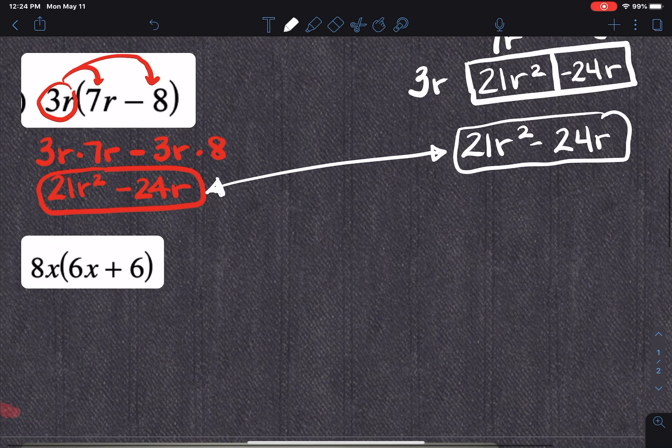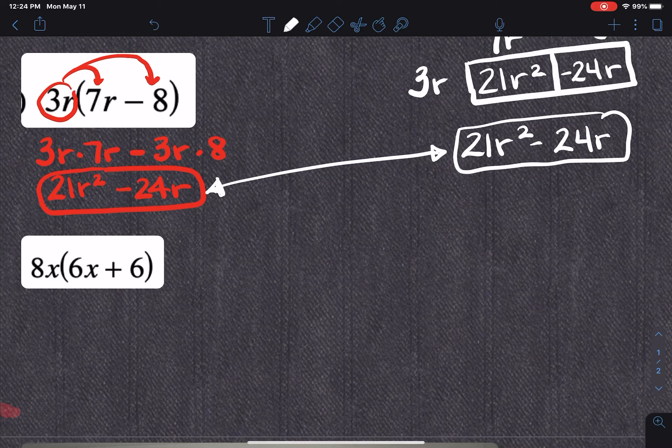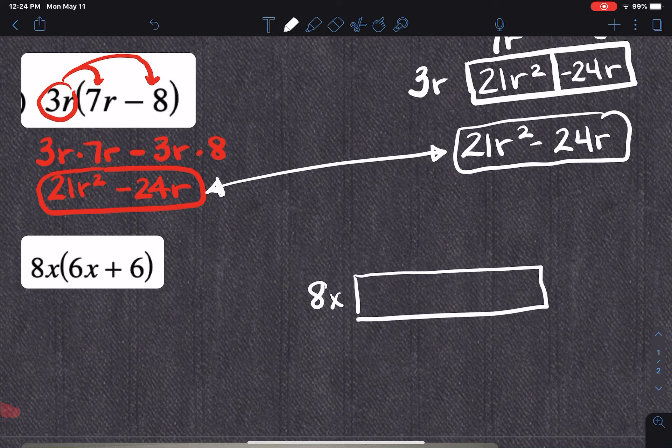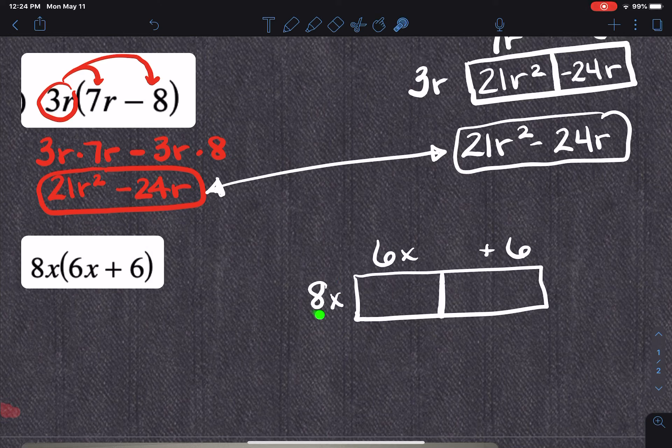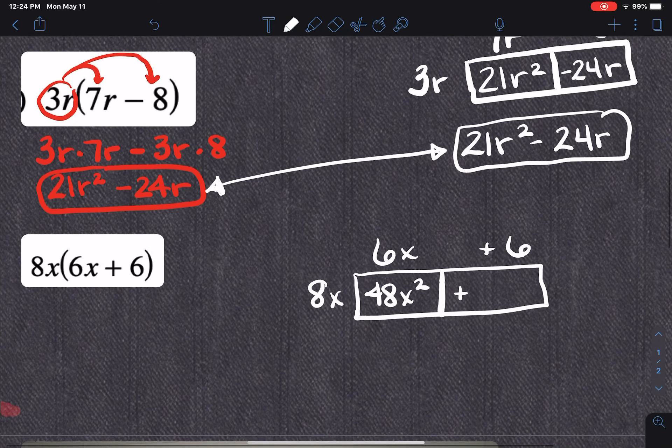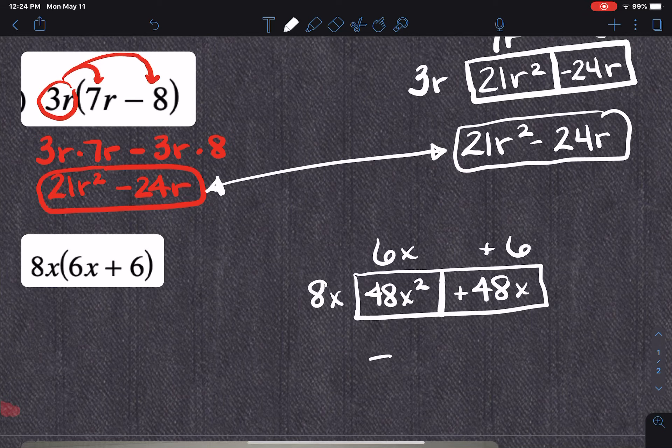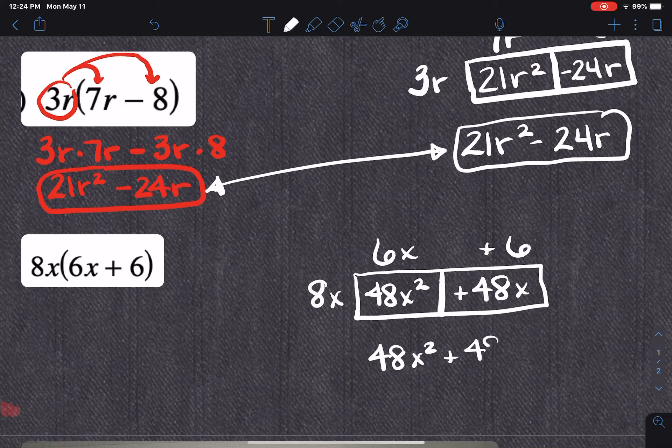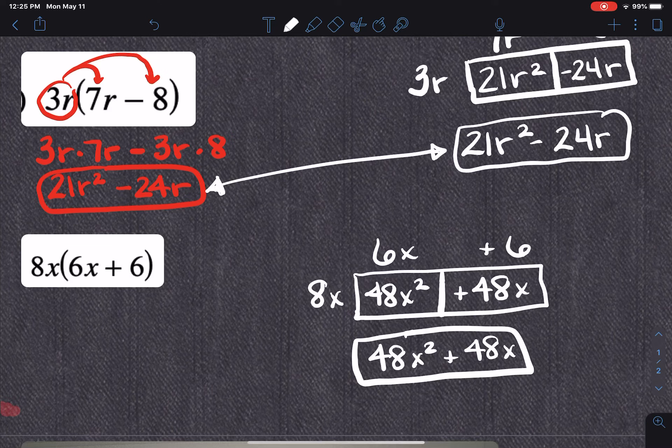So on this last one that I'm going to do today, I'm going to put this straight out in the box method. So 8X, make my box, 6X plus 6, and then I'm going to start my multiplying. So 8X plus 6X is 48X squared, and 8X plus 6 is plus 48X. So 48X squared plus 48X. Okay, make sure you're taking some good notes in this section and that's all for this one.